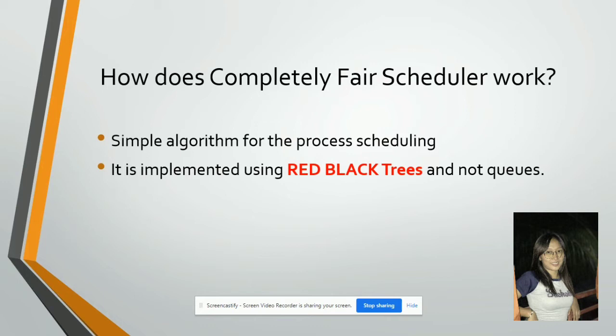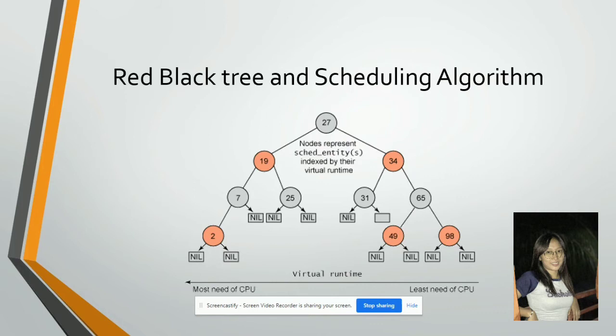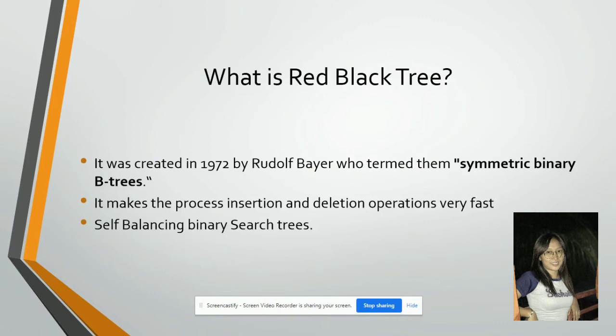How does the Completely Fair Scheduler work? It is a simple algorithm for process scheduling and it is implemented using red-black trees. In the red-black tree, each node represents scheduling entities indexed by their virtual runtime. In the center is virtual runtime. On the right side are processes that most need CPU, and on the left side are those that least need CPU.